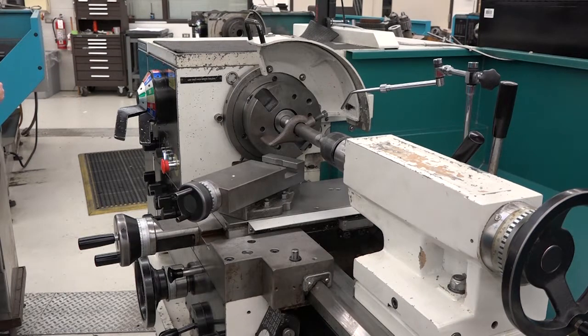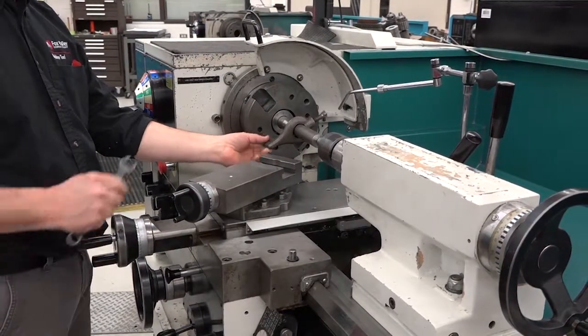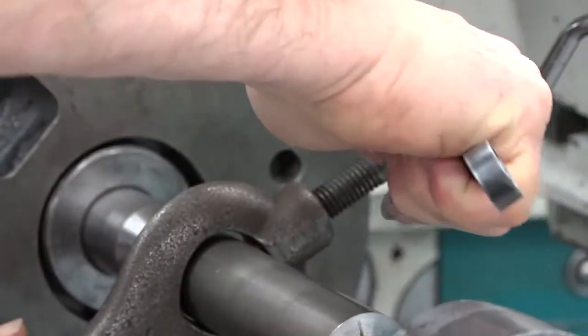Don't move the tailstock body once it's in place because it can change the taper setting. Next, we need to cut the taper. Slide the lathe dog into the drive slot or against the drive pin. Tighten the lathe dog.